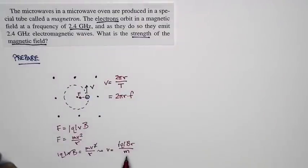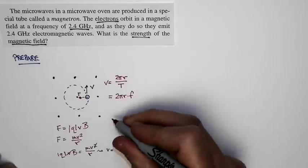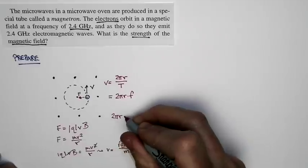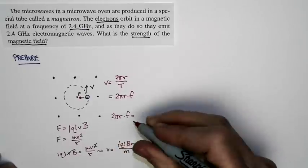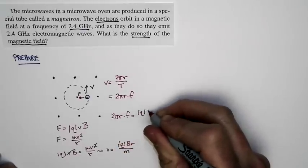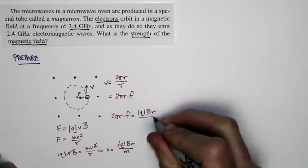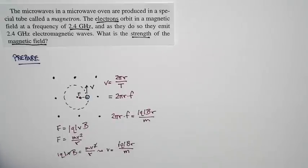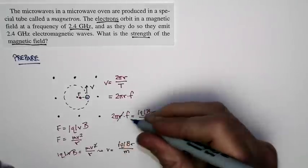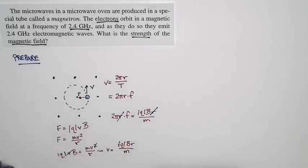So I can take this relationship for the speed and I can equate it to this relationship for the speed. And I get this: 2 pi r times f is equal to the magnitude of q times B times r divided by m. Now notice this, I've just equated two expressions for the speed. And so the speed does not appear in this equation anymore. And also, the size of the orbit cancels.